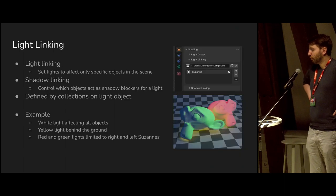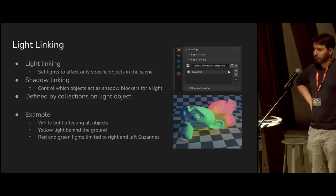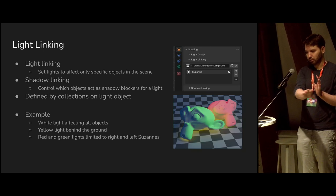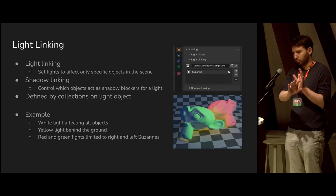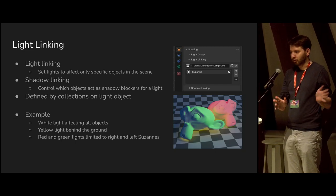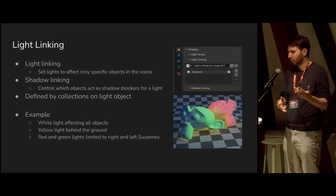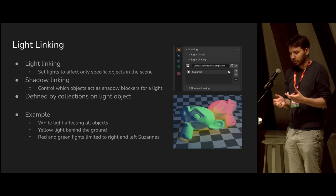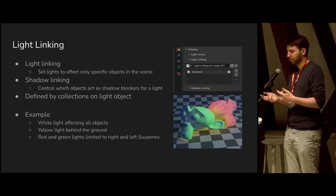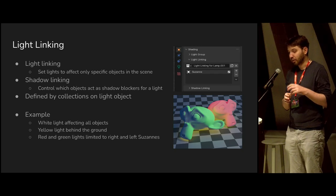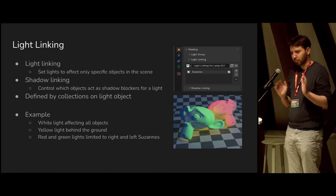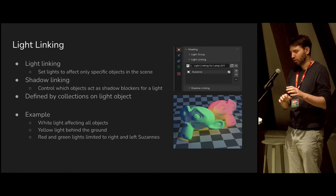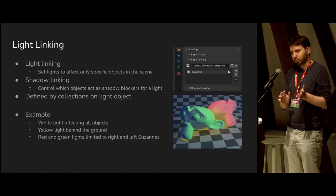This feature is basically two things: light linking and shadow linking. Light linking means you can say for this light I want to affect just these objects in the scene — for example, a rim light on one character but not on the entire environment. Shadow linking is something you need once you have light linking, because if you're adding a rim light to one character, you generally don't want the environment to block that rim light. So you want to be able to exclude certain objects from casting shadows for certain lights.